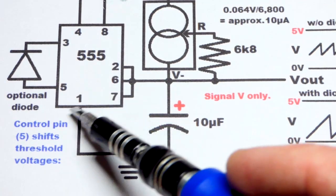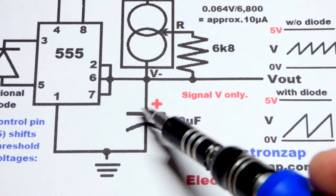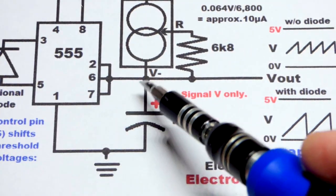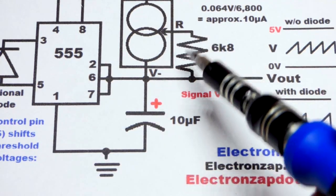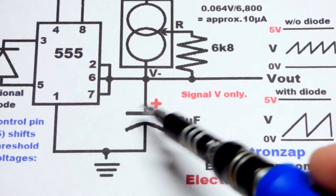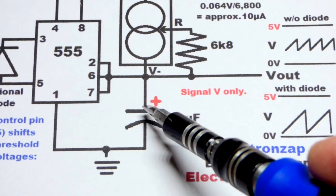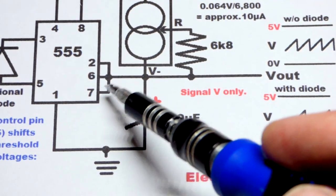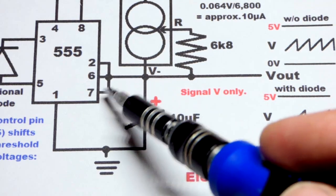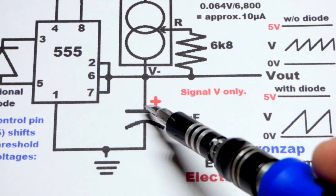It tells pin 7 to go low, to connect to ground, and so that will discharge the capacitor. That makes a direct connection, and any current that comes through will also go to ground, so that doesn't affect how fast the capacitor discharges. Sometimes you've got a resistor between pin 6 and pin 7, but we don't in this video.